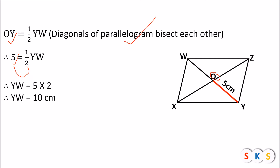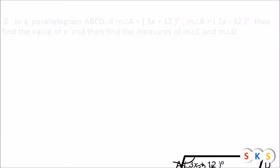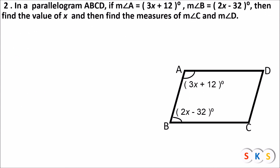Therefore, WY equals 10 centimeters. So we have the final answers: angle XWZ equals 135 degrees, angle YZW equals 45 degrees, and length WY equals 10 centimeters. Question number 2: In a parallelogram ABCD, measure of angle A equals 3x plus 12 degrees, measure of angle B equals 2x minus 32 degrees. Find the value of x and also find the measure of angle C and angle D.